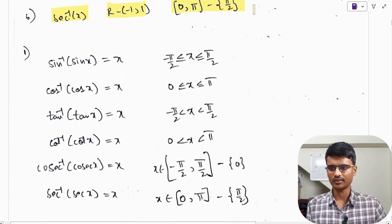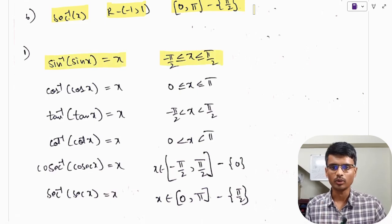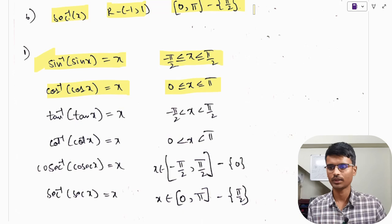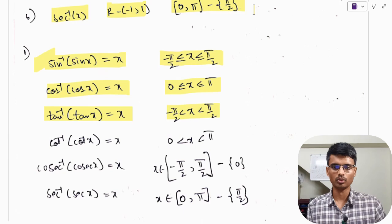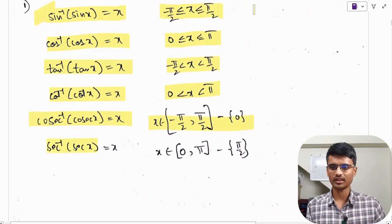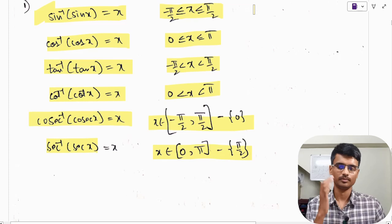Standard relations for inverse trig functions: sin⁻¹(sin x) = x only when x ∈ [−π/2, π/2]. Cos⁻¹(cos x) = x only when x ∈ [0, π]. Tan⁻¹(tan x) = x when x ∈ (−π/2, π/2). Cot⁻¹(cot x) = x when x ∈ (0, π). Cosec⁻¹(cosec x) = x when x ∈ [−π/2, π/2] excluding 0. Sec⁻¹(sec x) = x when x ∈ [0, π] excluding π/2.